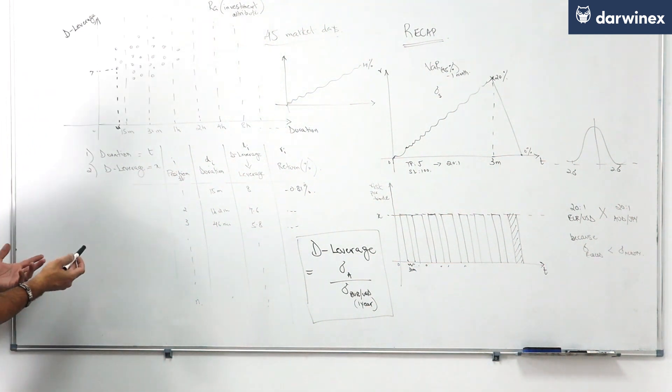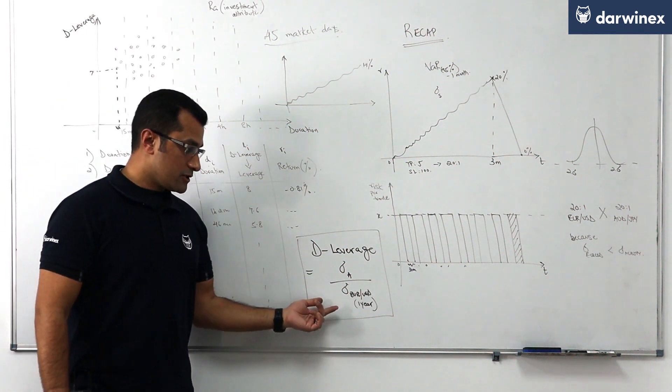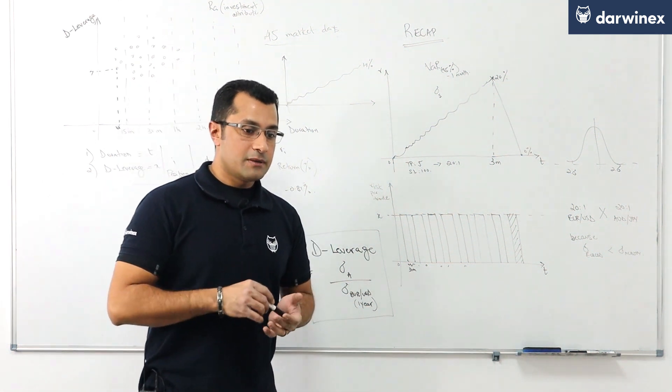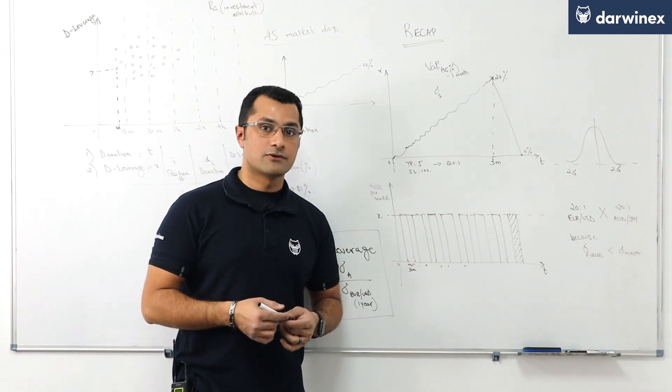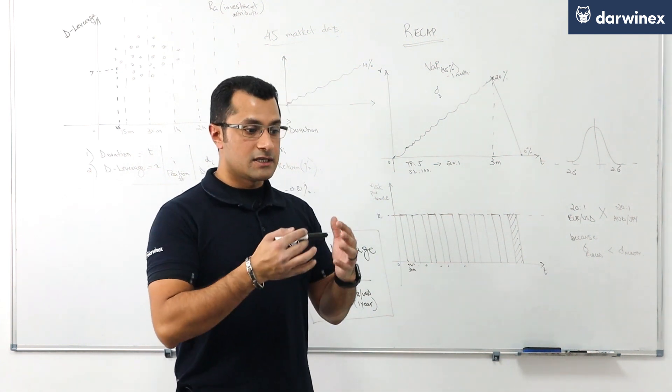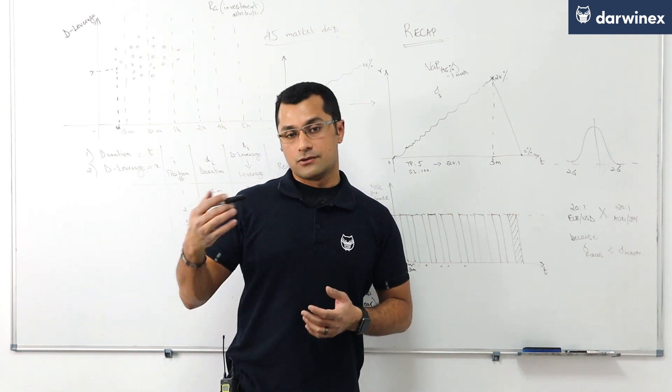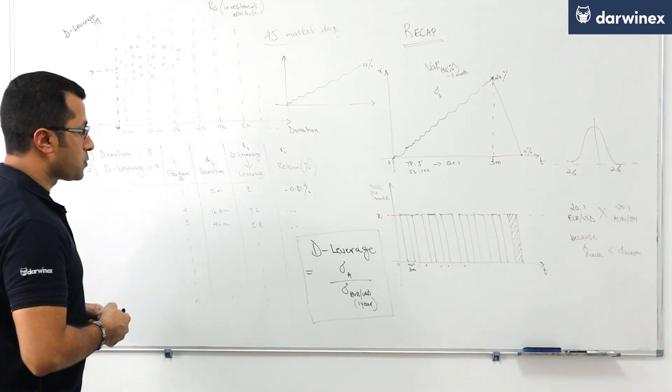Now given that each position has a duration and a deleverage value and if you recall from previous tutorials on what deleverage represents, taking let's imagine if a trading position has a deleverage of x, it effectively means it is the equivalent of taking a leveraged x to one position trade on the euro dollar the reference asset using returns data from the last one year.